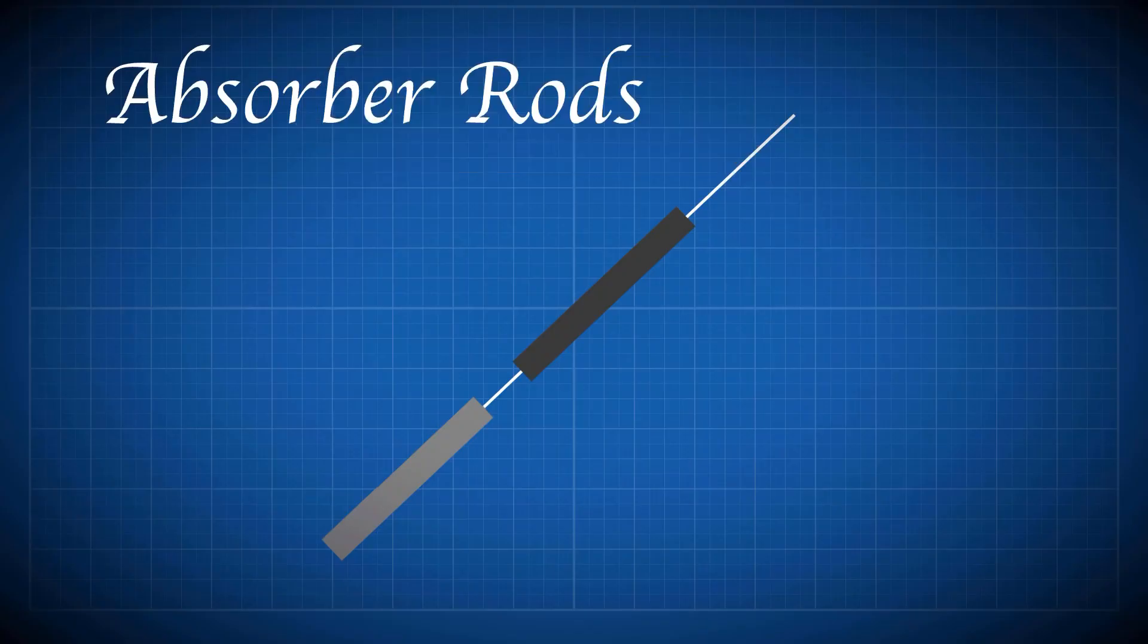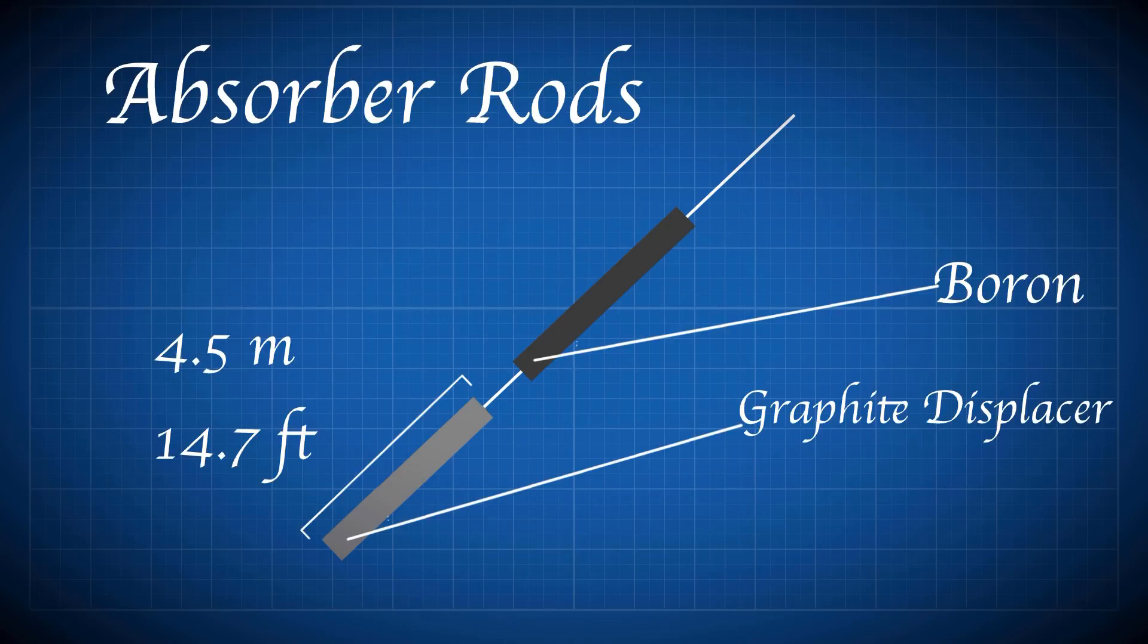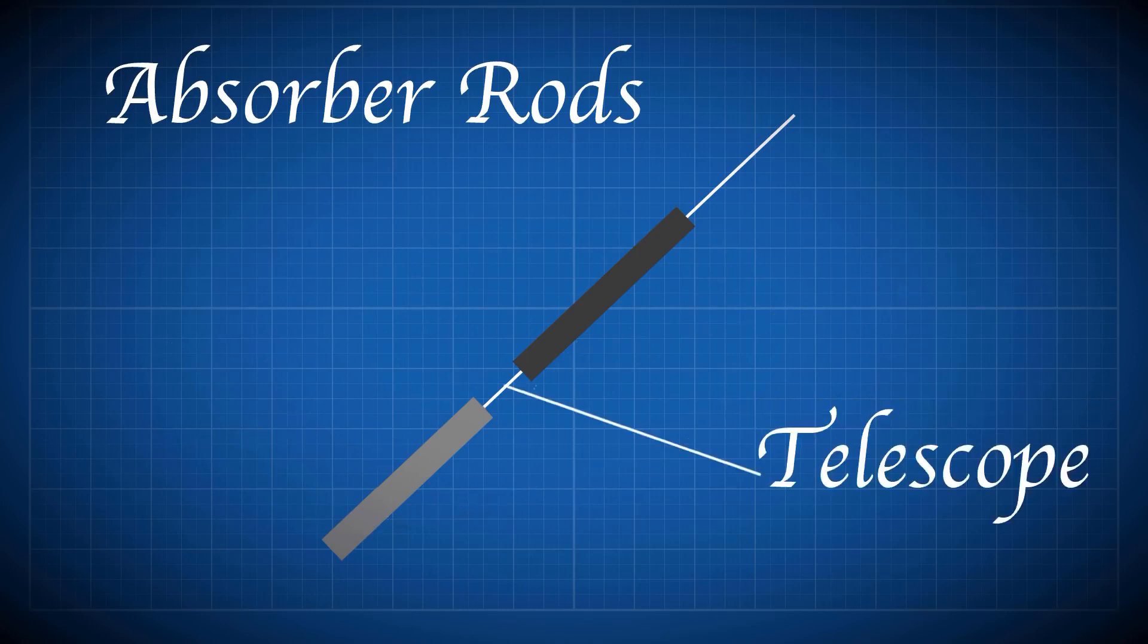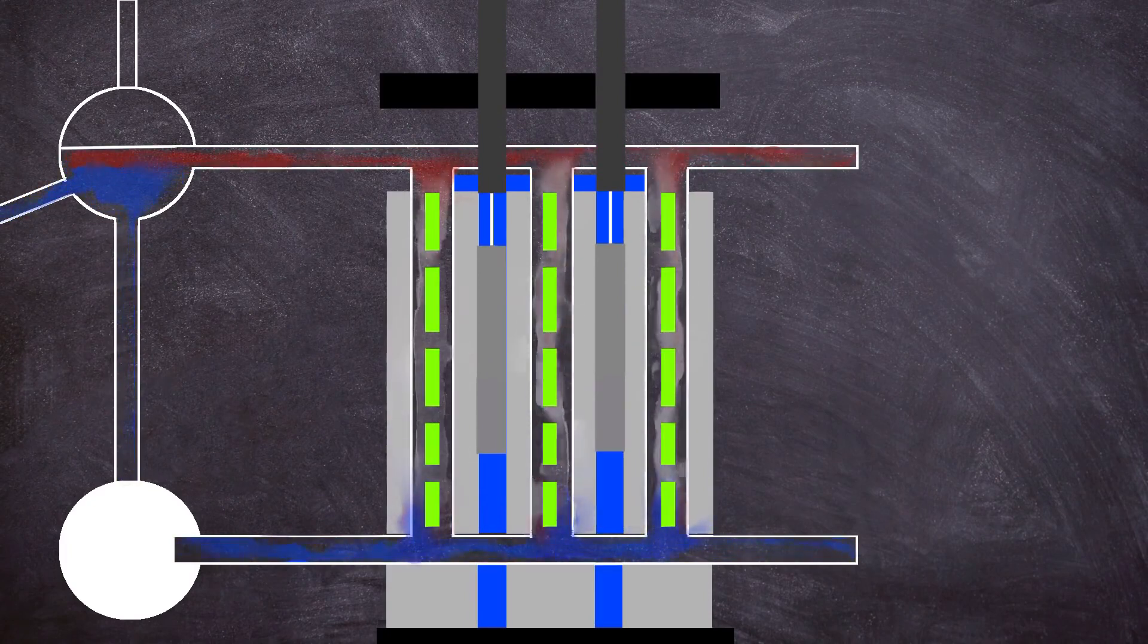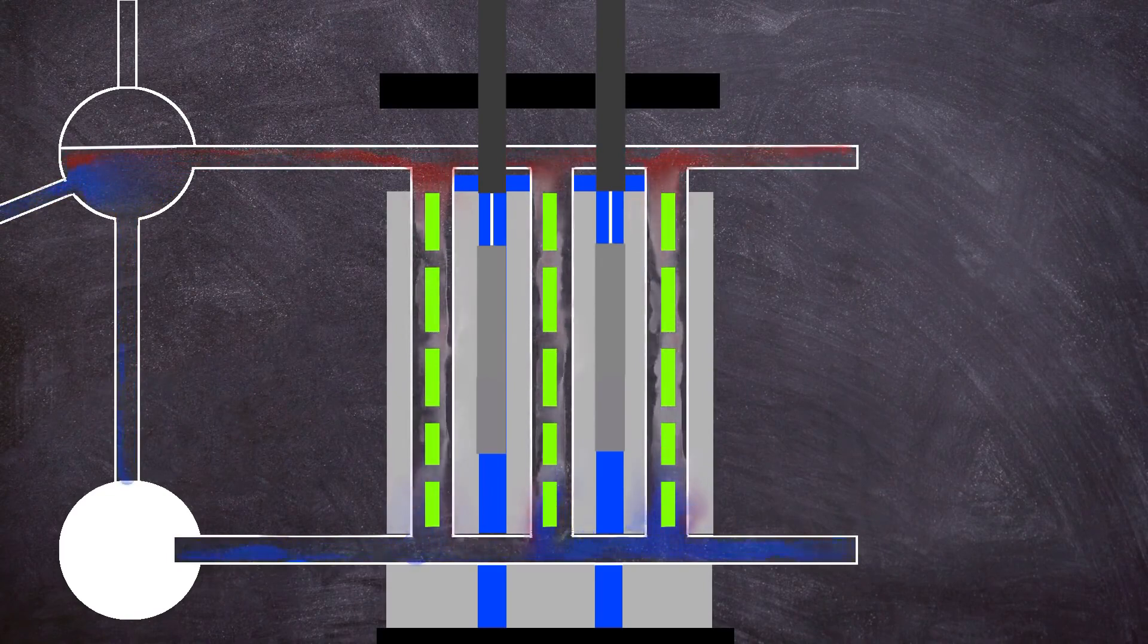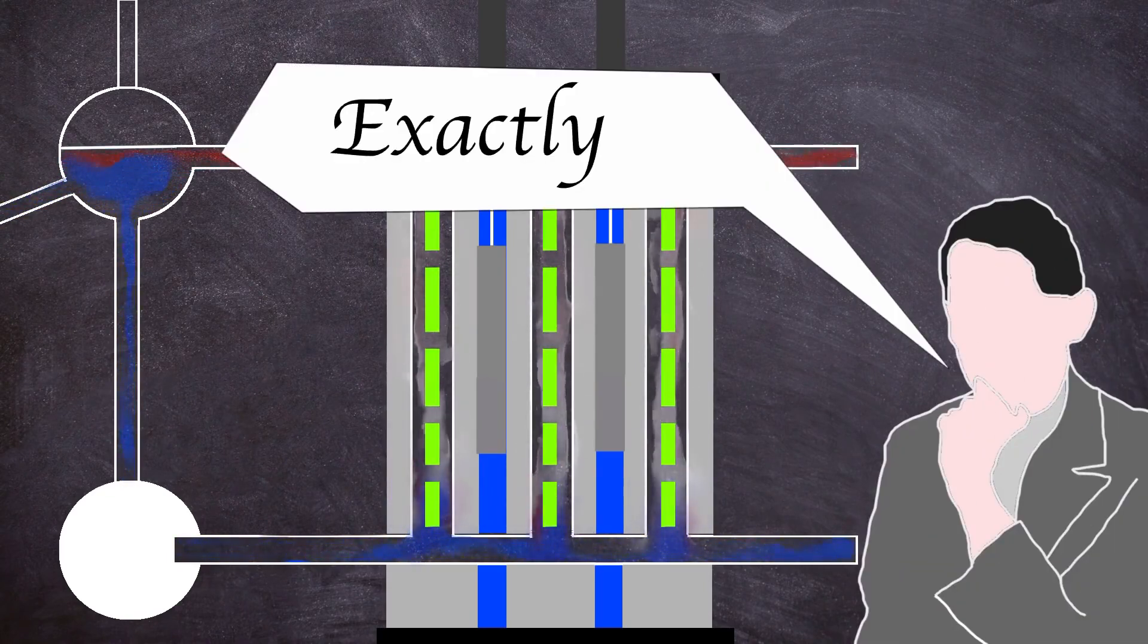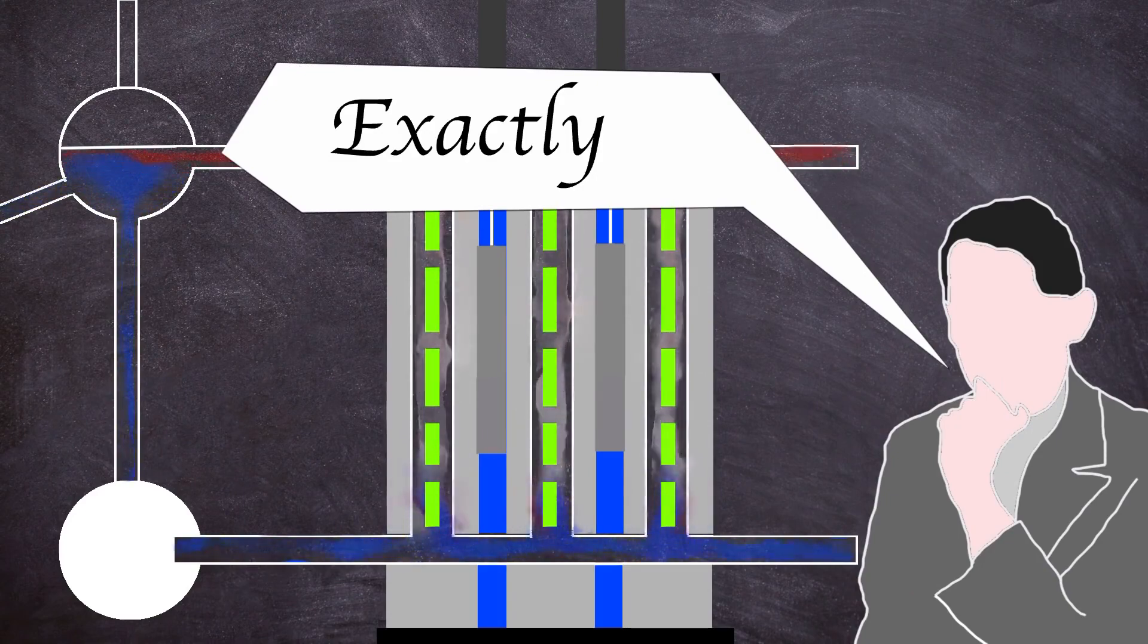The main control rods had a 4.5 meter long graphite rod termed a displacer attached to the end of the length of the control rods, except for the 12 rods that were used in automatic control. The displacer connected to its rod via a telescope with a water-filled space of 1.25 meters separating the displacer and absorbing rod. This was to stop water filling the space left behind by the control rod after it has left the core region, which would parasitically absorb neutrons, because removing one neutron absorber in the form of a boron control rod to be replaced by another neutron absorber, albeit weaker in the form of H2O, kind of defeats the point of a control rod.